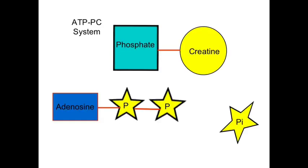The first system we are going to look at is the phosphocreatine, or ATP-PC energy system. Phosphocreatine is an energy-rich compound that when broken down releases energy to resynthesize ATP. No oxygen is involved in this process, so it is entirely anaerobic. For every molecule of PC that is broken down, enough energy is released to resynthesize one molecule of ATP.